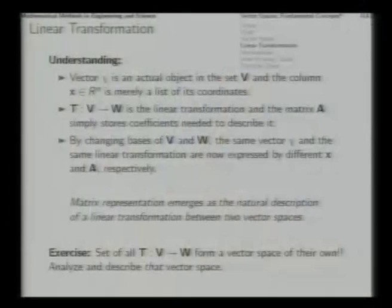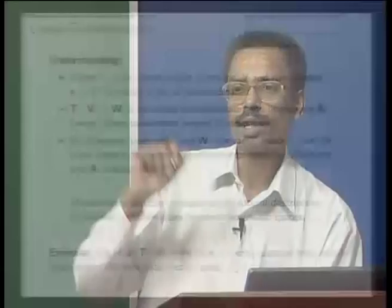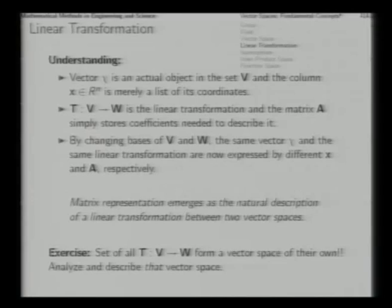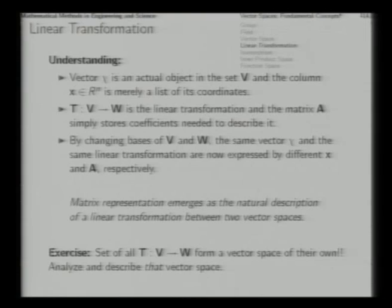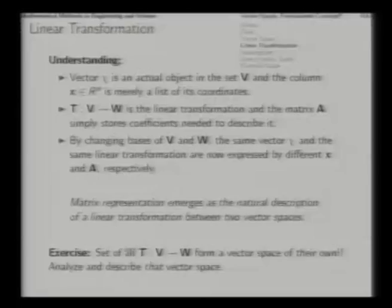As an exercise, consider all linear transformations that you can define from one vector space V to W — they can be collected together to form a set. From one vector space V to W you can define several linear transformations. All of these linear transformations collected together form a set, and you can verify that this set in itself actually defines a vector space. You can analyze and describe that vector space in the context of its dimension, its elements, the way its elements get added, and so on. So all linear transformations from one vector space to another together actually form a vector space of their own.